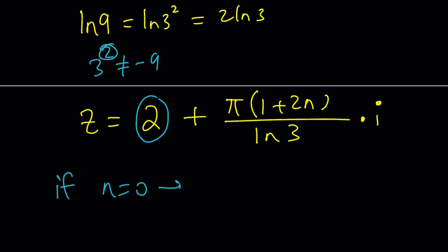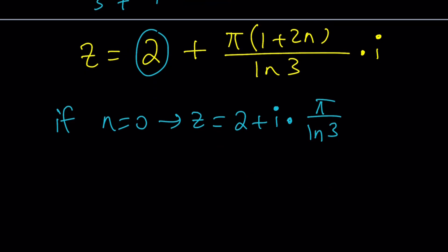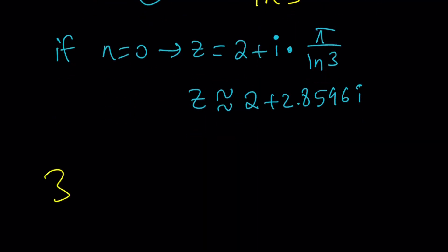If n is equal to 0, you're going to get z equals 2 plus i times π over ln(3). This is a complex, non-real number, and z is approximately equal to 2 plus 2.8596i — a complex number in the a plus bi form. Let's go ahead and check something out. What happens if I replace z with that?